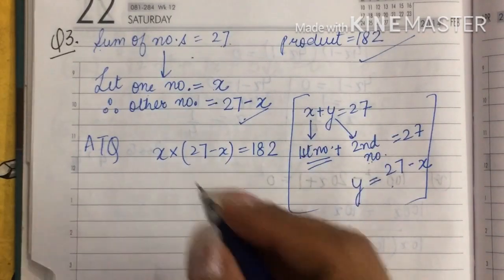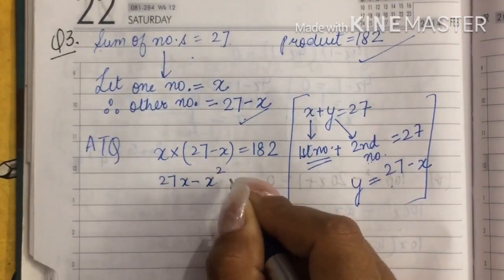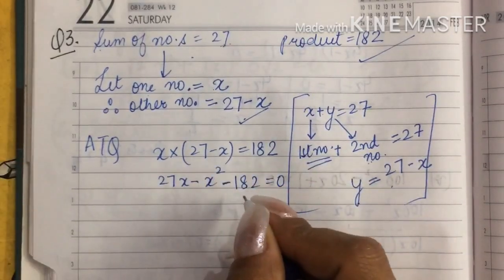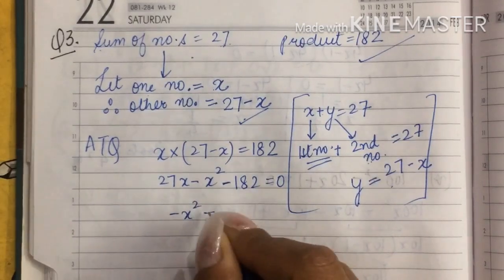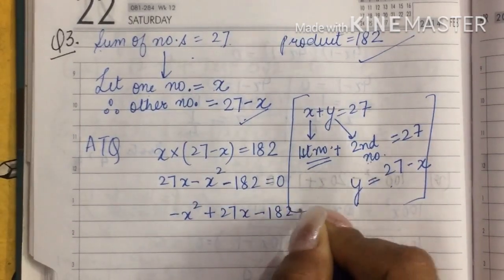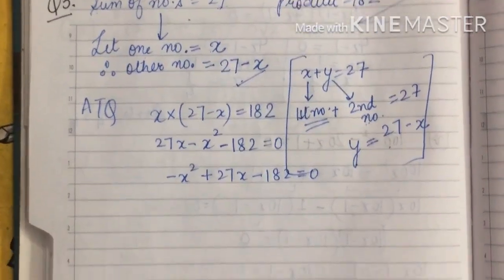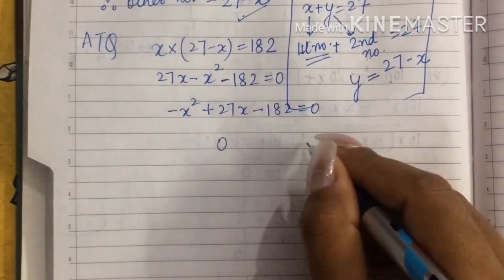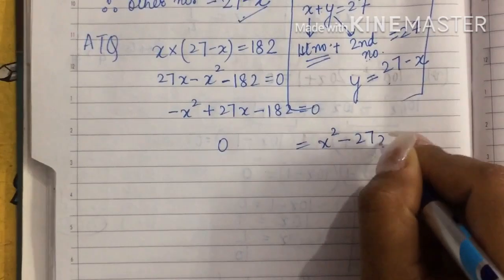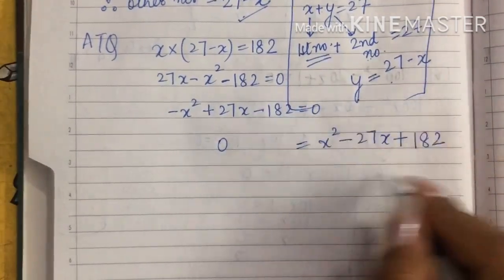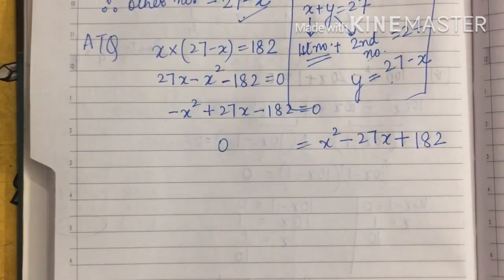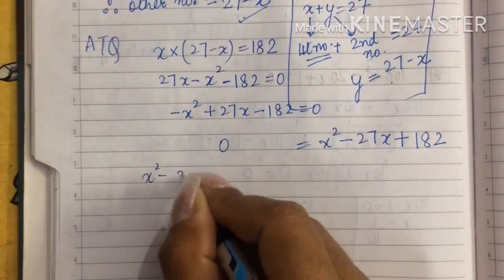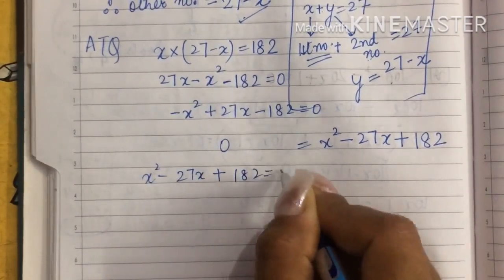Let's solve this: 27x minus x squared. Transposing 182 to the left hand side gives minus x squared plus 27x minus 182 equals 0. Taking negative common, or transposing all terms to the right hand side, this becomes x squared minus 27x plus 182. Now I will be factorizing this to obtain the value of x. So x squared minus 27x plus 182 equals 0.